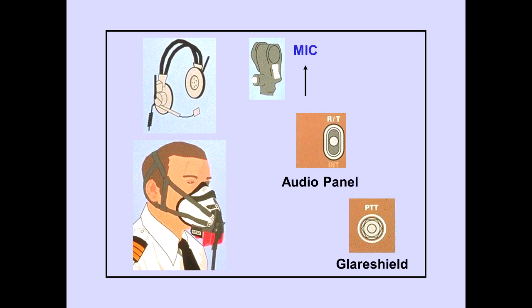You can transmit with the boom microphone or oxygen mask microphone using the mic position of the control column push-to-talk switch. The radio transmit RT position of the switch on the audio panel and the push-to-talk PTT button on the glareshield may also be utilized.